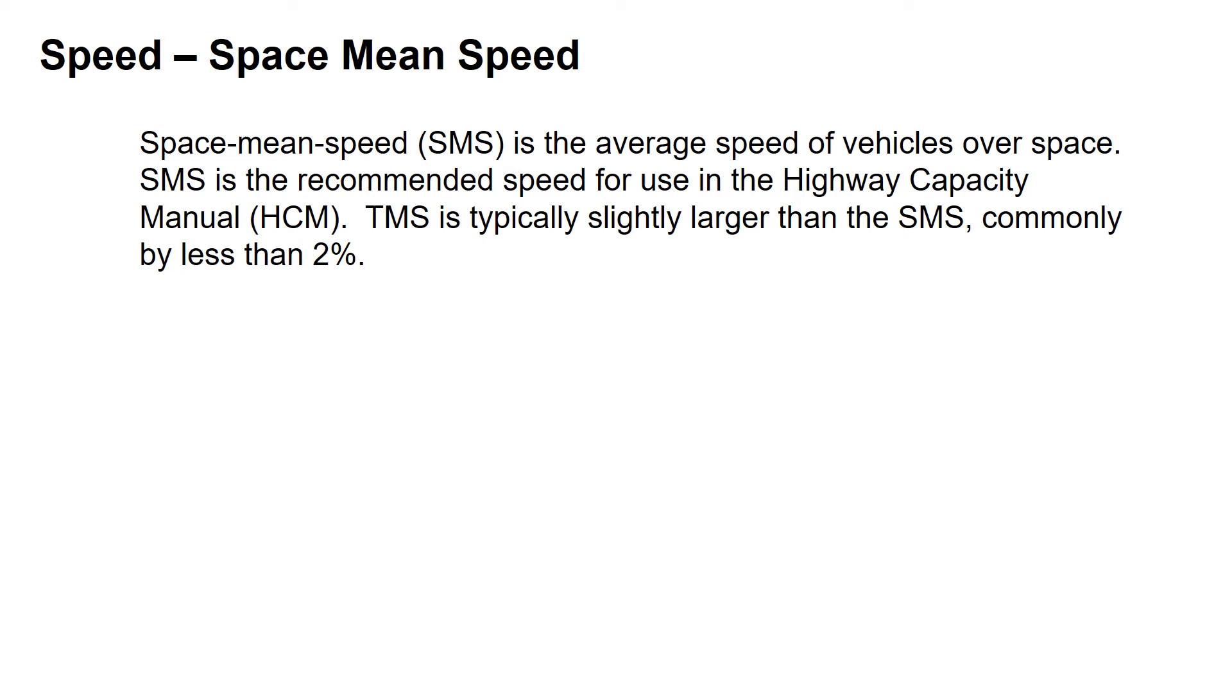Space Mean Speed (SMS) is the average speed of vehicles over space. The Space Mean Speed is the recommended speed for use in the Highway Capacity Manual procedures. The Time Mean Speed is typically slightly larger than the Space Mean Speed, commonly by less than a couple of percent.